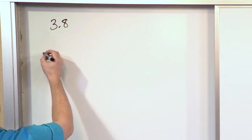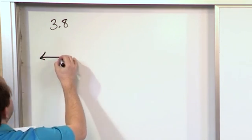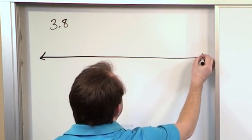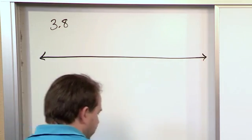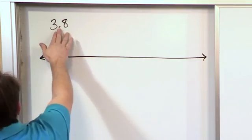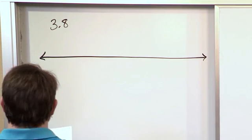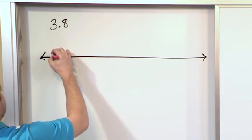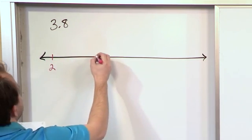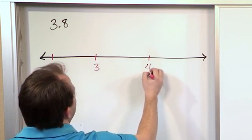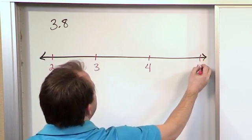I'm going to draw a number line. We're not going to do it for every problem, but I'm going to do it once because I think at least once it will help you visualize what's going on. So let's put the number 3.8 on this number line. Let's go ahead and say this is the number 2, this is the number 3, this is the number 4, and over here could be the number 5.